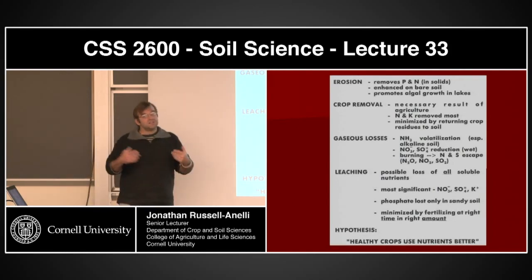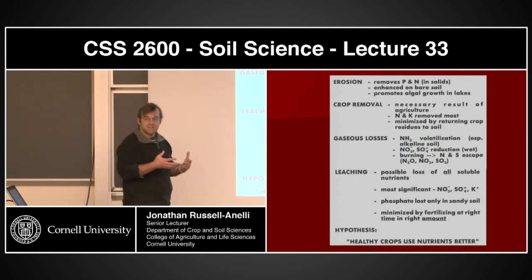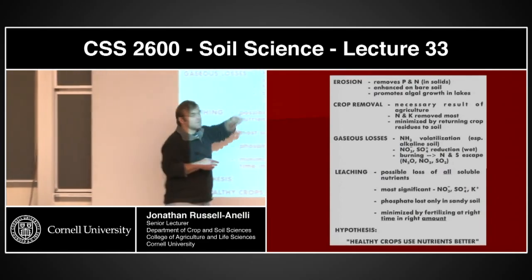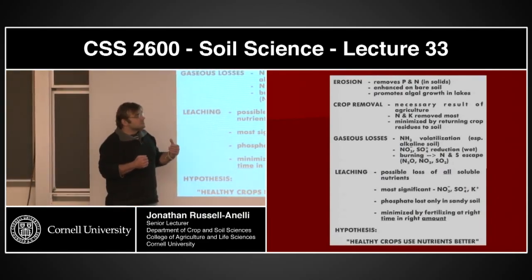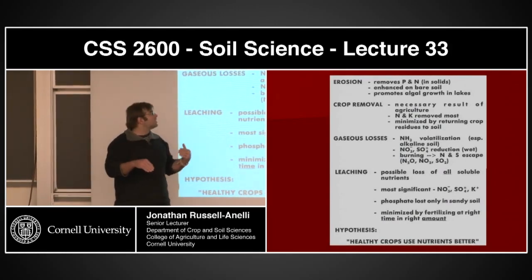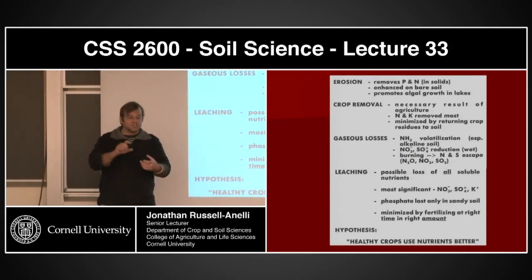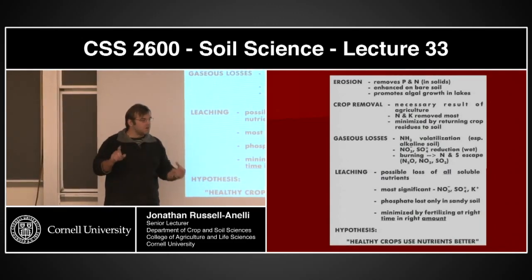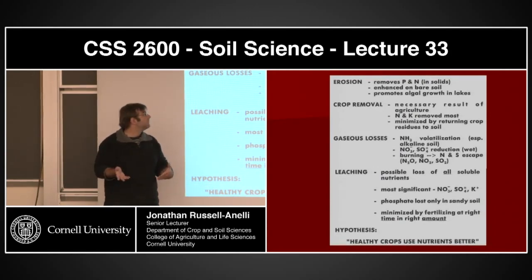Crop removal is necessary if we're cropping something — we're going to have to harvest, and if we harvest we're basically taking nutrients with us. N and K are basically removed the most from this system, but we can minimize some of this loss by returning crop residues to the soil. If we're just taking the seed and leaving the rest behind, that remaining biomass is going to have NPK in it as well, and that's going to go back into the soil as that material decomposes.